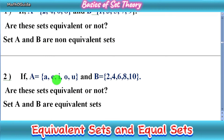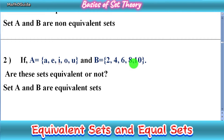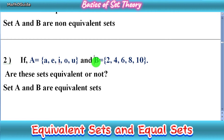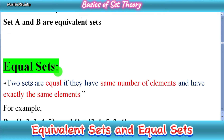Let's discuss another example. Set A equals {a, e, i, o, u}, the set of vowel letters, and set B equals {2, 4, 6, 8, 10}, the first five even numbers. We have to check whether these sets are equivalent or not. Clearly, set A has five elements and set B also has five elements, so the cardinality of both sets is the same. Therefore, set A and B are equivalent sets.